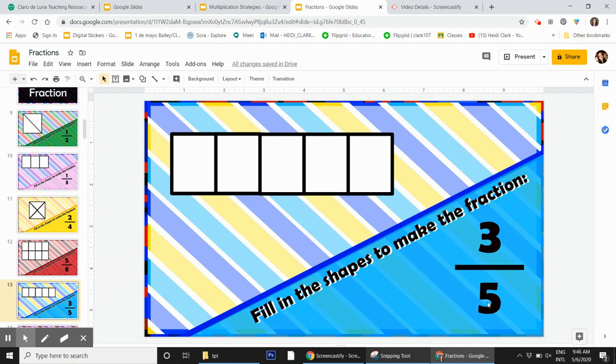So the bottom number, the denominator, tells us how many parts it's split into. So here's the whole and it's split into 1, 2, 3, 4, 5.